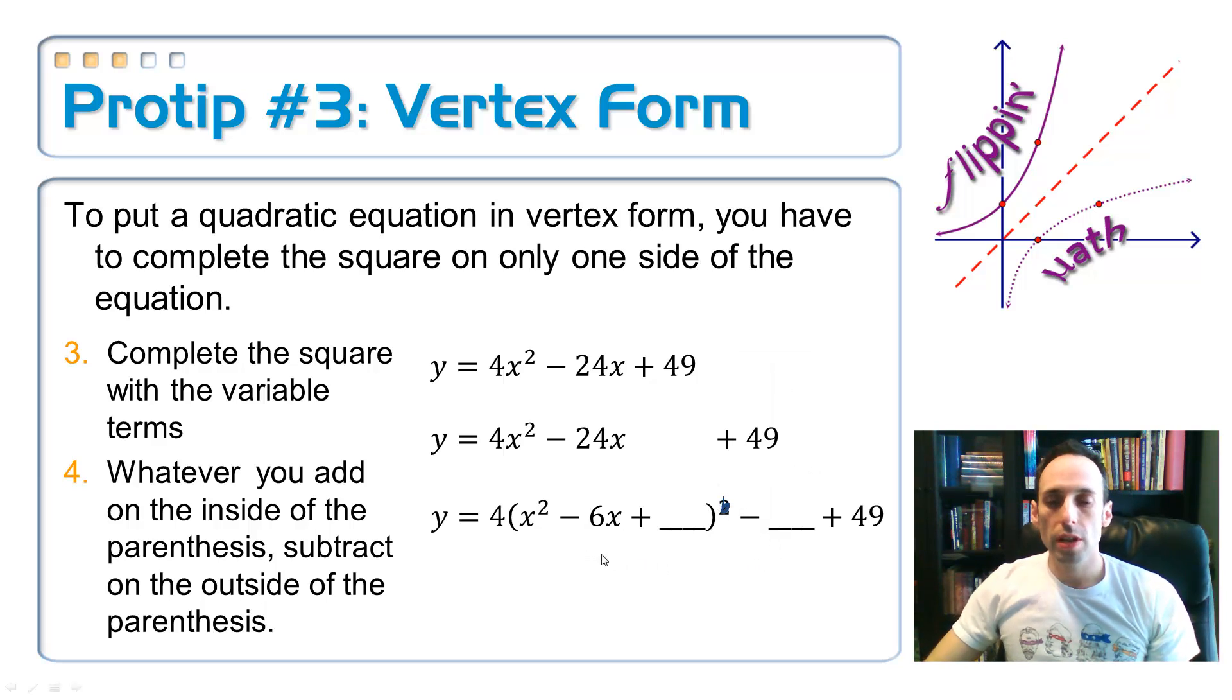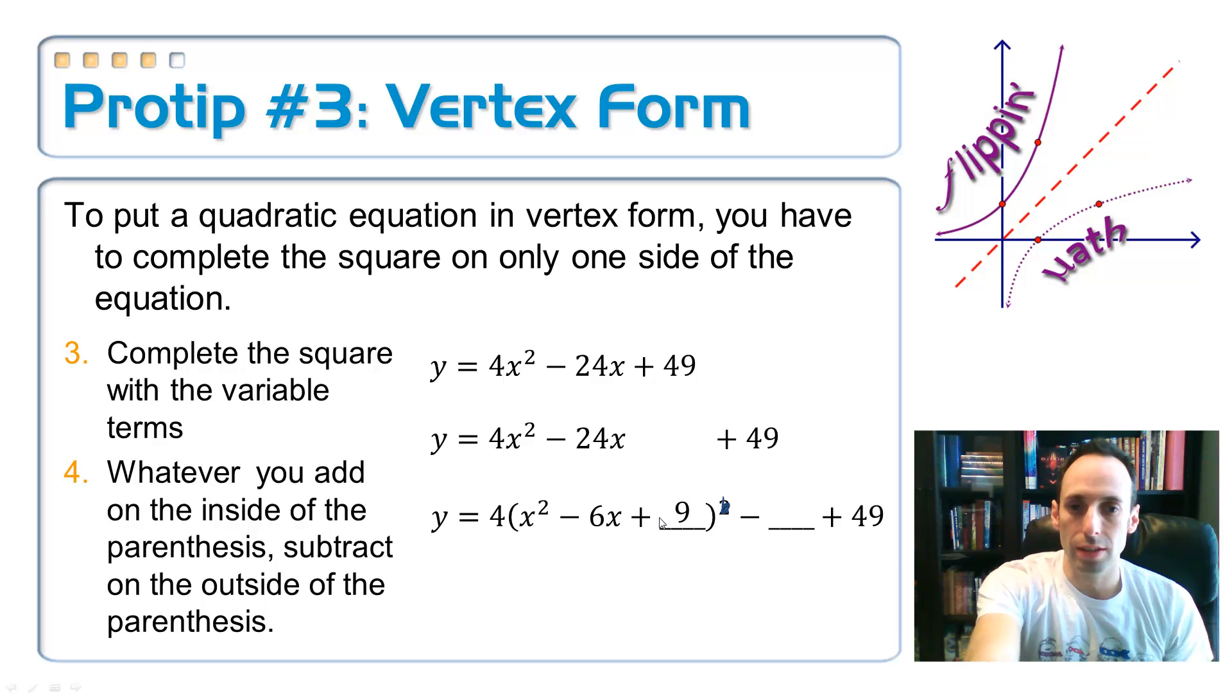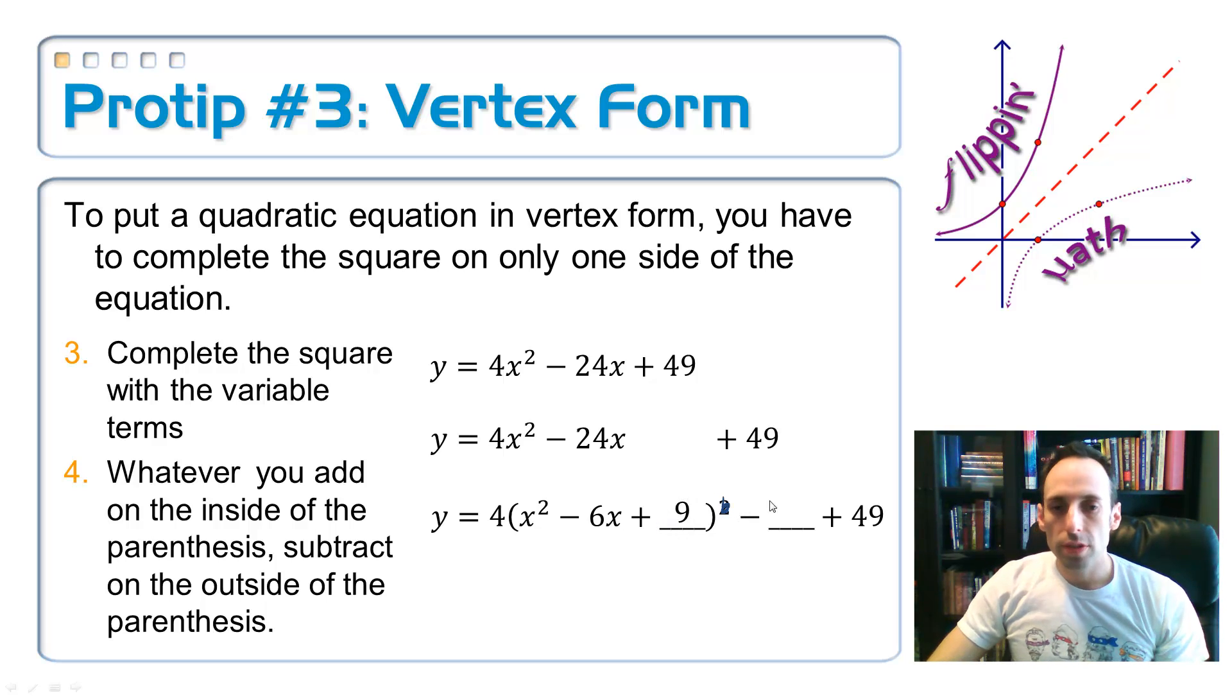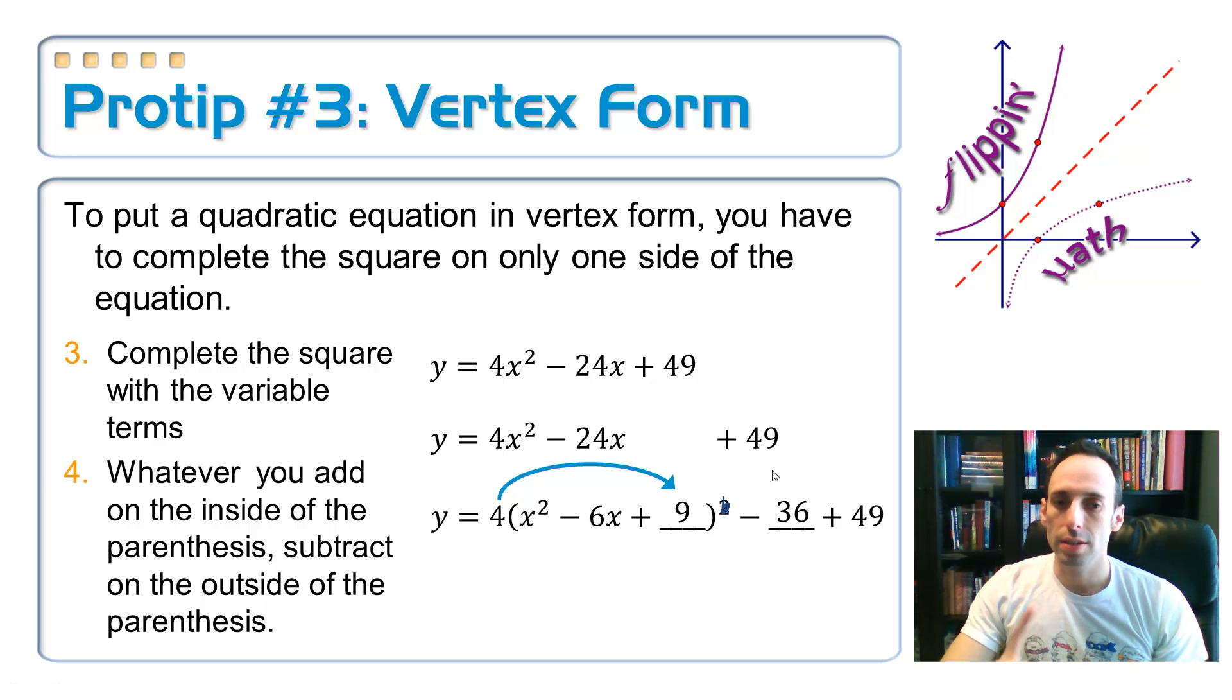Okay, so now the next step is, of course, you want to complete the square here. So take half of that, negative 3, squared up is 9, so you're going to add 9 inside there. Whatever you added on the inside, we have to subtract on the outside. Are we going to subtract 9? No, no, no, no, no. It's 4 times 9, which is 36. We have to subtract out of 36.